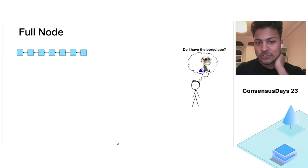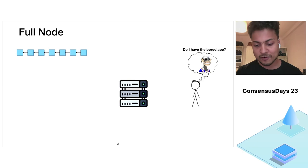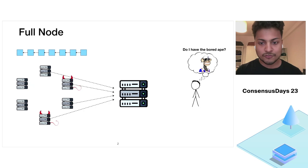Let's say Bob wants to connect to the Ethereum network and he wants to know if he owns a certain NFT, let's say BoredApe. For this, the more secure way for him to do this would be to run his own full node. The full node would connect to multiple other full nodes in the network and try to sync to the latest state of the network.